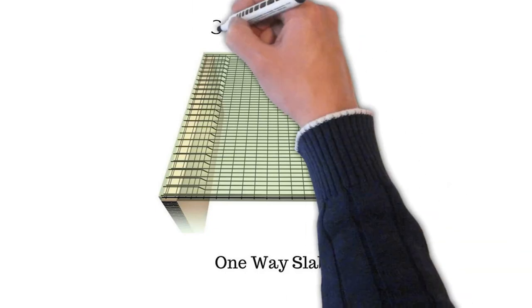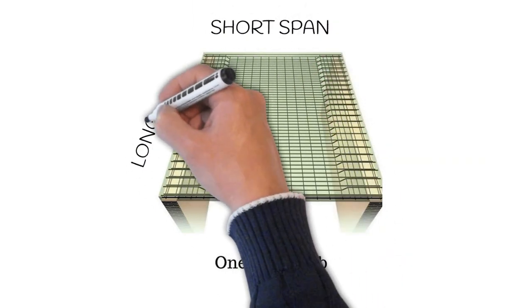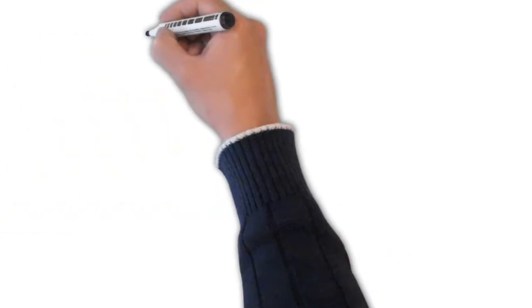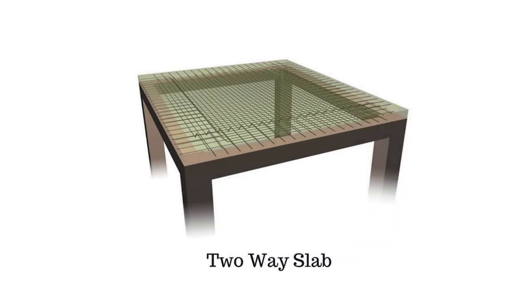Whereas in two-way slab, the load is carried in both directions, so the main reinforcement is provided in both directions.